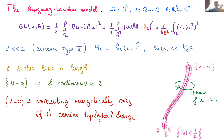We expect u to remain small in an epsilon neighborhood of the curve, and also expect topological charge on the curves. That means when you go around the curve, the phase of u should increase by 2π, or minus 2π, or a multiple of 2π. This structure is called a vortex filament.